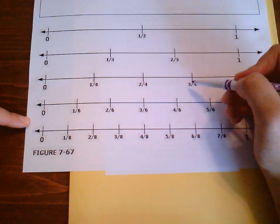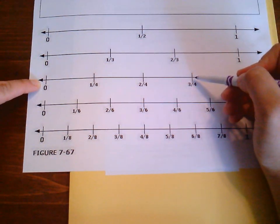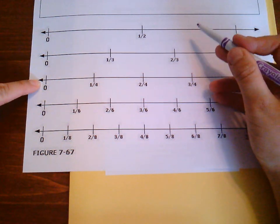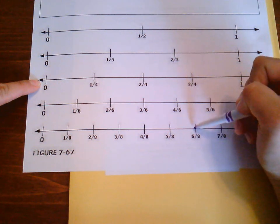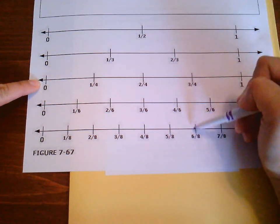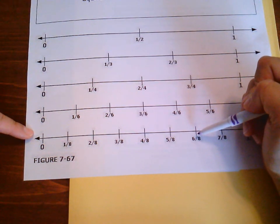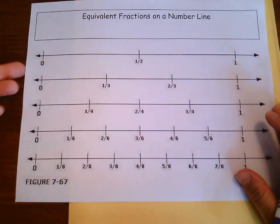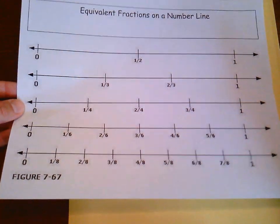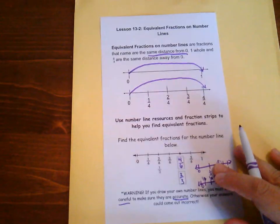Let's try out another one. So here we've got three fourths. What is equivalent to three fourths? I can slide up, there is nothing there. And then as I slide down, I see that six eighths is equivalent to three fourths, because they are the same distance away from zero. And that is how we can use this fraction resource to find our equivalent fractions.